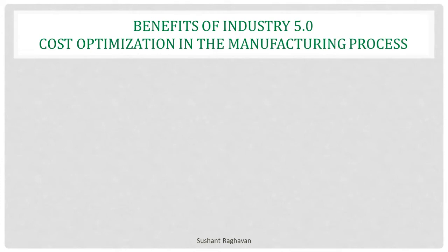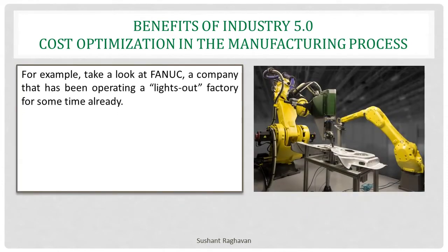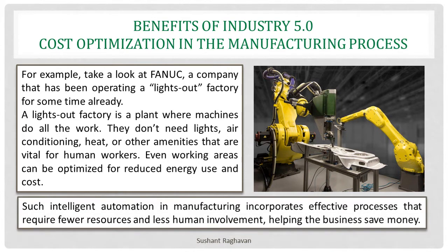One benefit of Industry 5.0 is cost optimization in the manufacturing process. For example, take a look at Fenwick, a company that has been operating a lights-out factory for some time. A lights-out factory is a plant where machines do all the work — they don't need lights, air conditioning, heat or other amenities vital for human workers. Working areas can be optimized for reduced energy use and cost. Such intelligent automation incorporates effective processes that require fewer resources and less human involvement, helping the business save money.